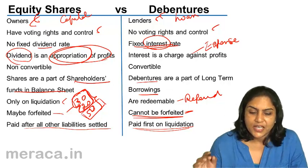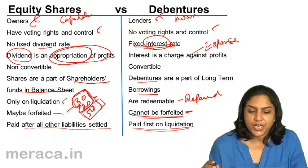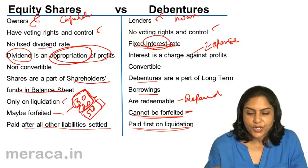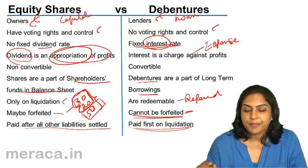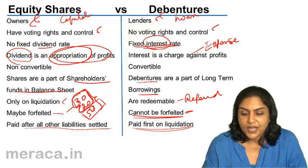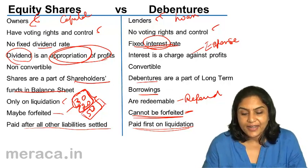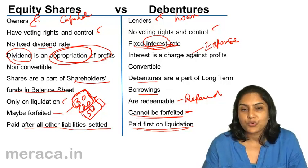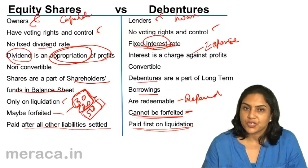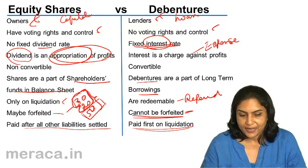Thus, equity shareholders are owners of the company, whereas debenture holders are lenders to the company who receive a fixed rate of interest.